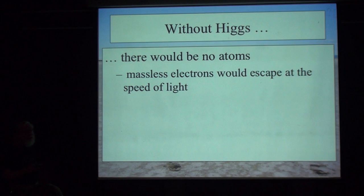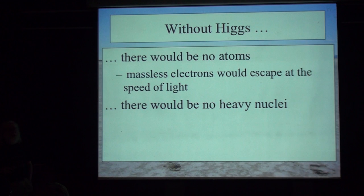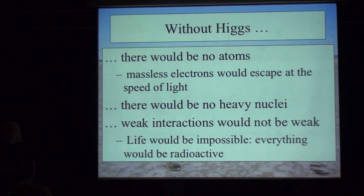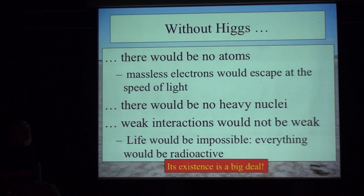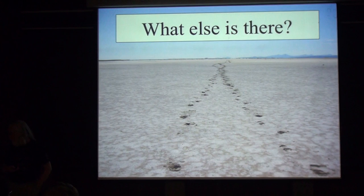Without the Higgs boson there wouldn't be atoms because electrons would run away at the speed of light. There wouldn't be any heavy nuclei because quarks would be massless, weak interactions would not be weak, life would be impossible, and everything would be radioactive. So the existence of the Higgs boson is unquestionably a big deal — but is it the only big deal, or is there something else out there to discover at the LHC?